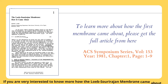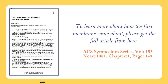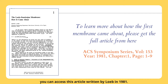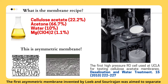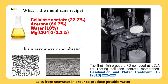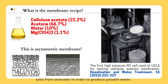If you are very interested to know more about how the Loeb-Sourirajan membrane came about, you may access the article written by Loeb in 1981. The first asymmetric membrane invented by Loeb and Sourirajan was aimed to separate salts from seawater in order to produce potable water.